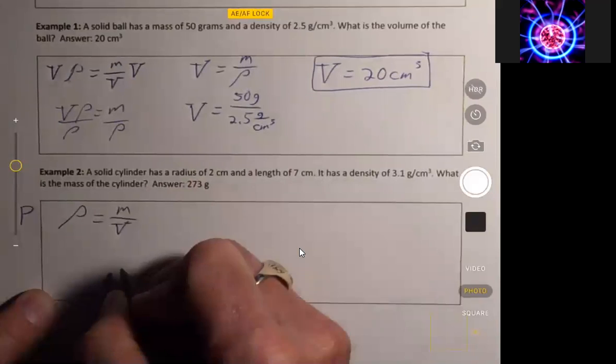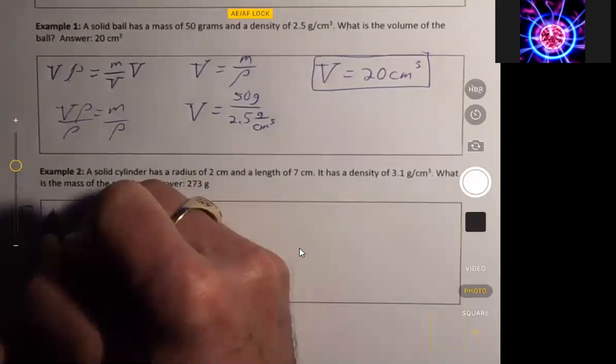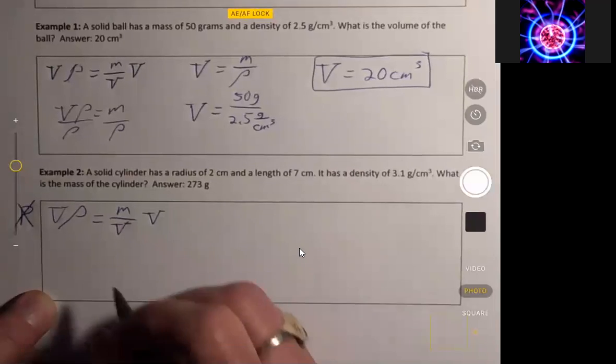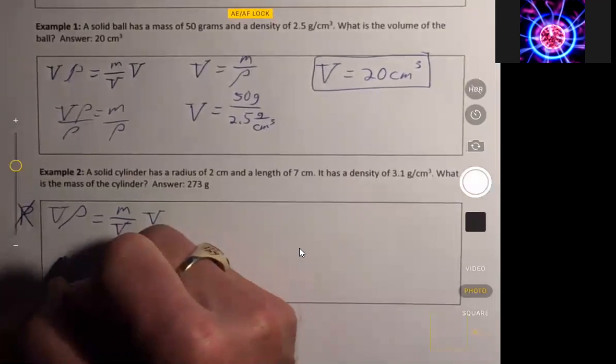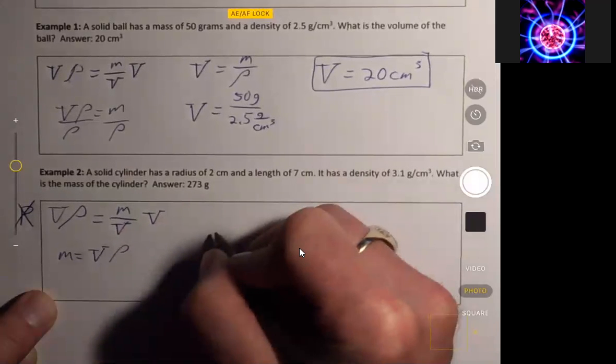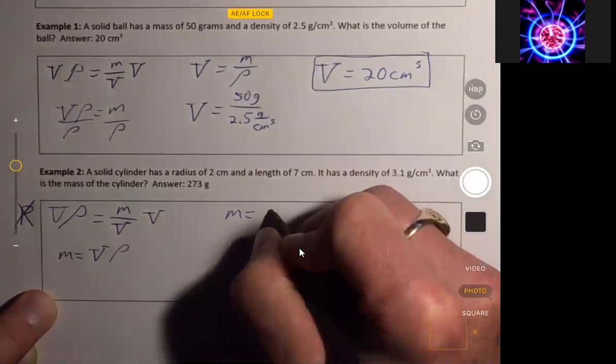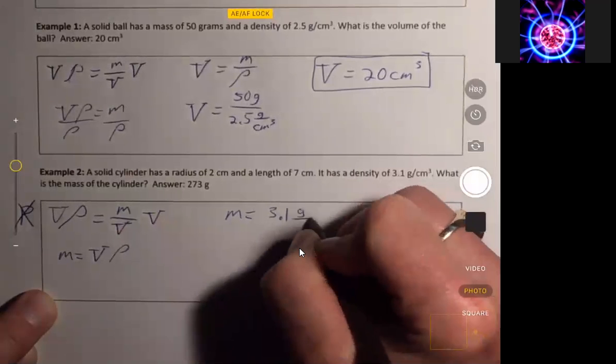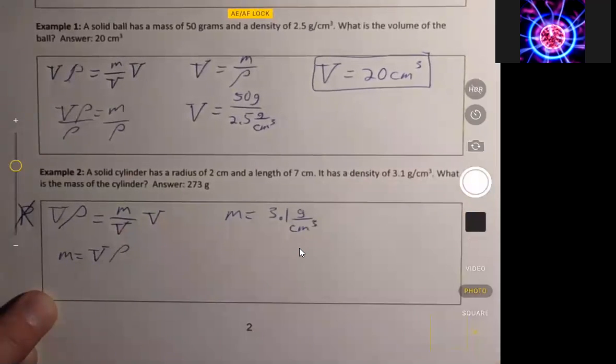All right, so we multiply both sides by volume. Let's get rid of that P—P is for pressure or lowercase p for momentum. In any case, mass equals volume times density. So mass equals 3.1 grams per cubic centimeter. That's the density.